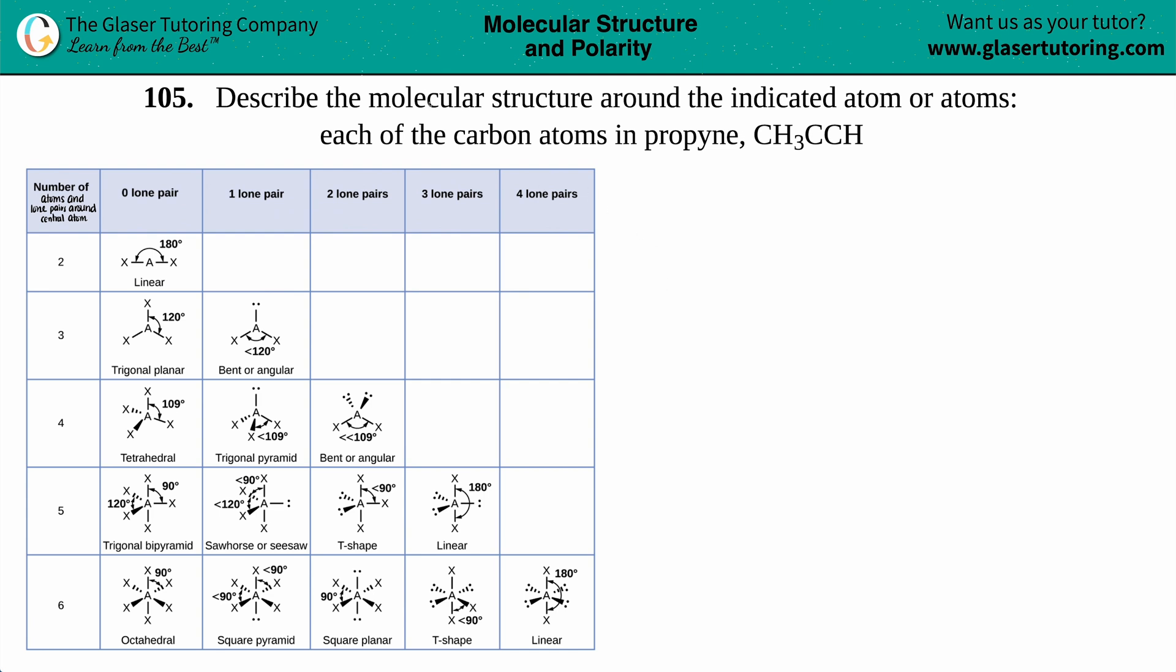Number 105, describe the molecular structure around the indicated atom or atoms, and then we need to find the molecular structure of each of the carbon atoms in propyne, which is CH3CCH.